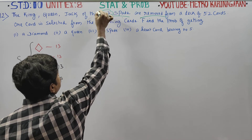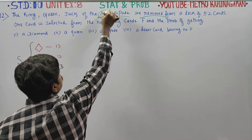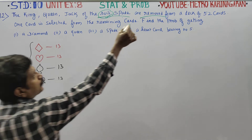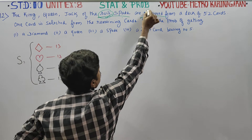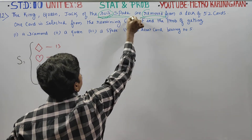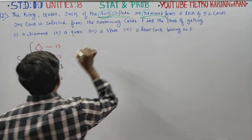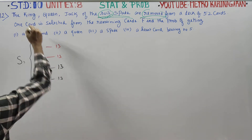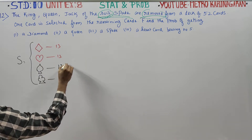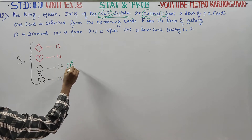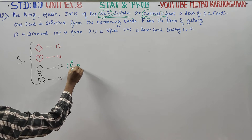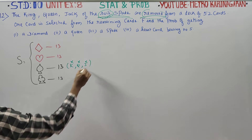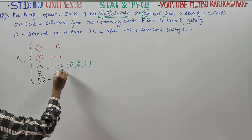In the spade suit of cards, the King, Queen, and Jack are removed from the set. Now, 3 cards are removed.